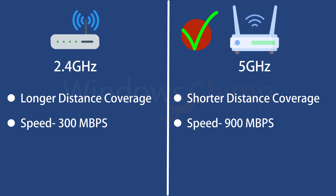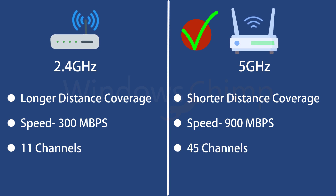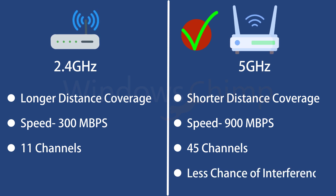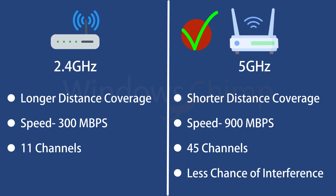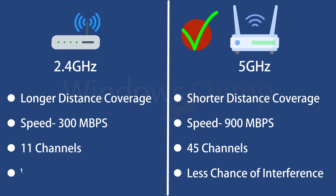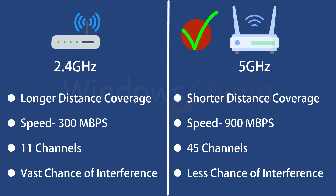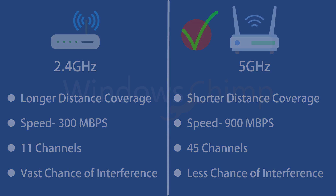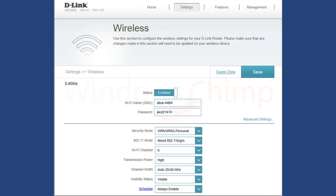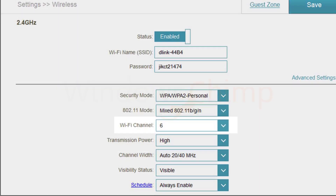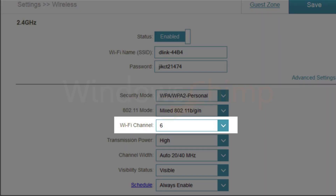The 2.4 GHz routers have 11 channels, and 5 GHz routers come with 45 channels, meaning with 5 GHz routers you have less chance of interference. Also, most people around you are using the 2.4 GHz Wi-Fi, so there are vast chances of reducing speed due to interference. You can log into your router and try changing its channel to see if the speed gets increased.